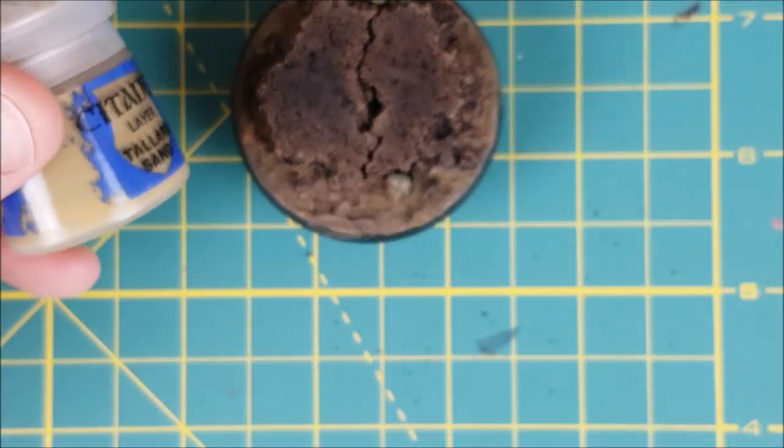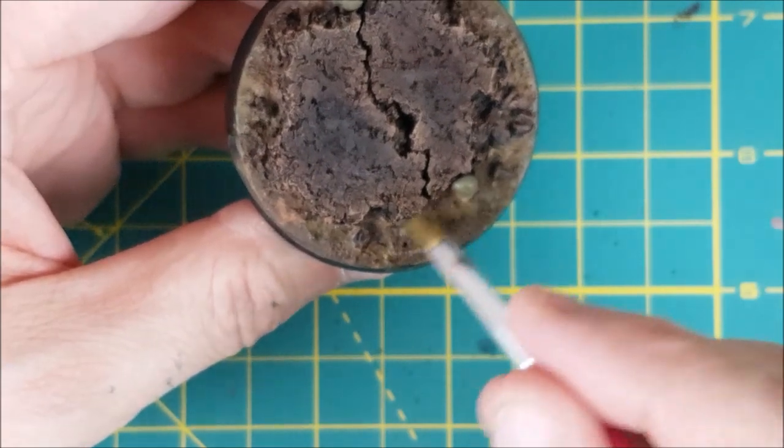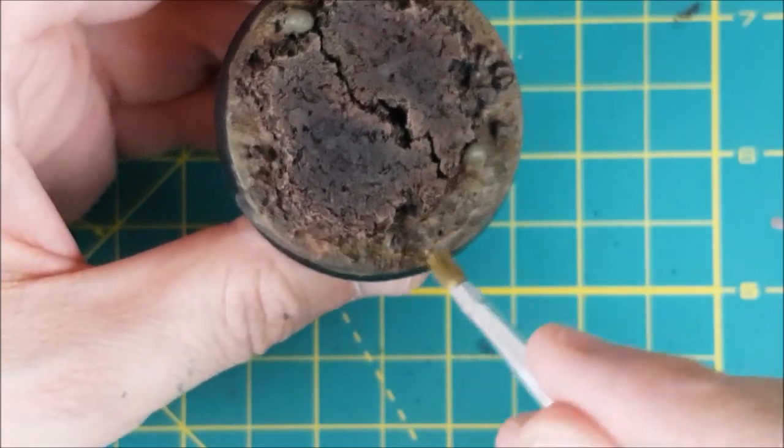Next I'm switching to Tallarn Sand, and I'm doing a heavy dry brush on all of the dirt texture. I'm then going to do a light dry brush all around the edges of the cork.